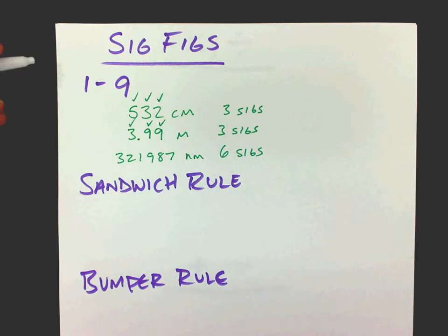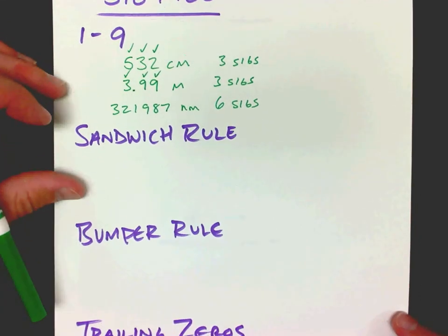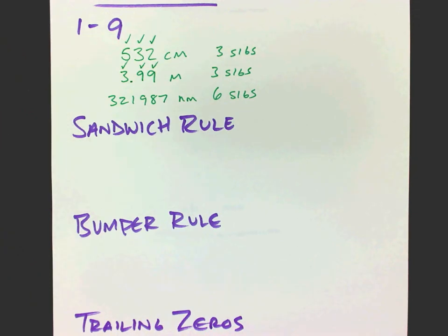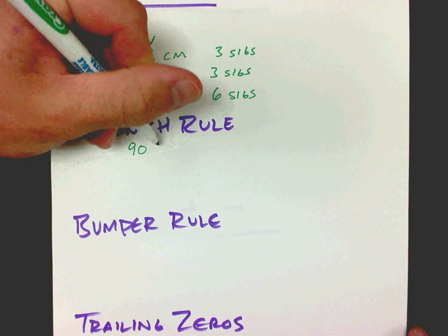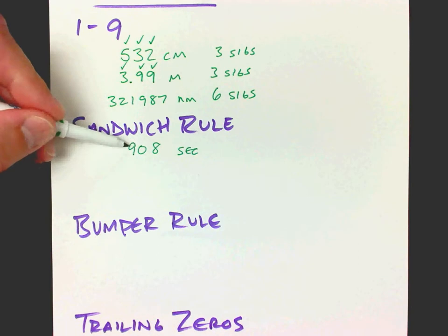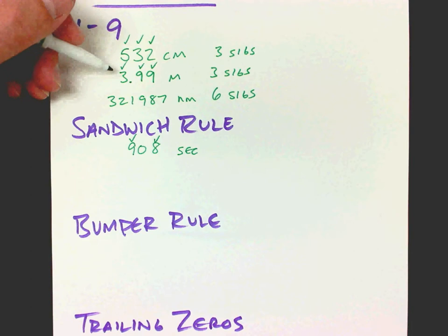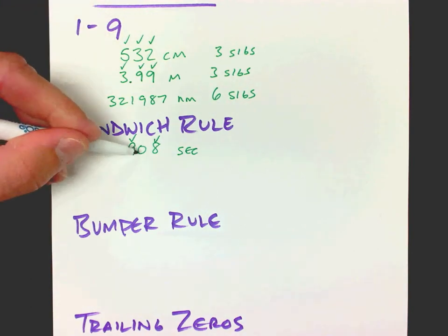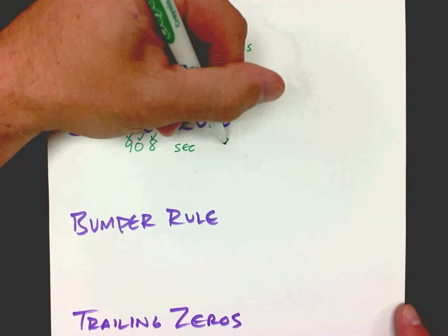The zeros are the tricky part where you really have to watch where they're located and what they're doing to determine if they're significant or not. I've divided these into three rules. The sandwich rule is the first one — I think it's the easiest. If you have a zero that is surrounded, sandwiched by, say, a 9 and an 8, that zero is also significant. So we would have 3 sigs there.